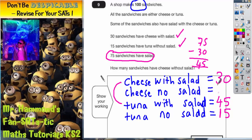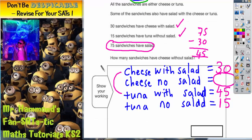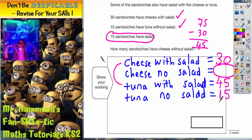Now there is only one left. And no surprises, it's the one that we're actually trying to find. Cheese without salad. So cheese no salad. Now at this point, we've got to go all the way back to the beginning, where it said there were 100 sandwiches.